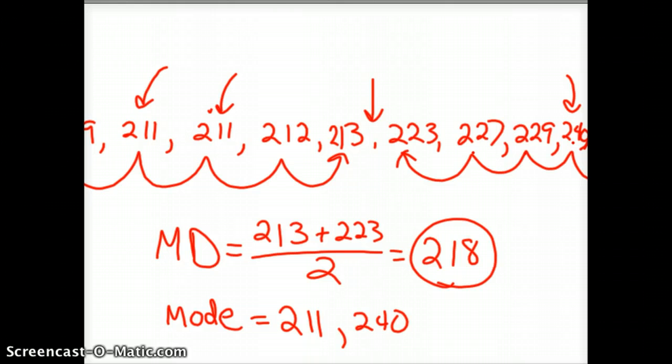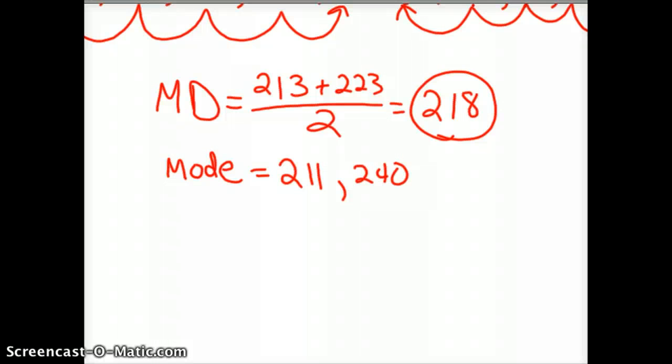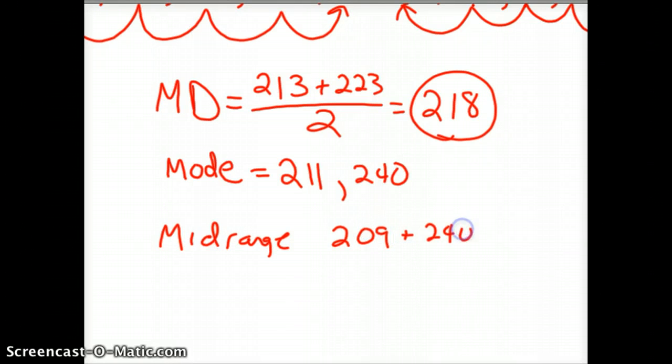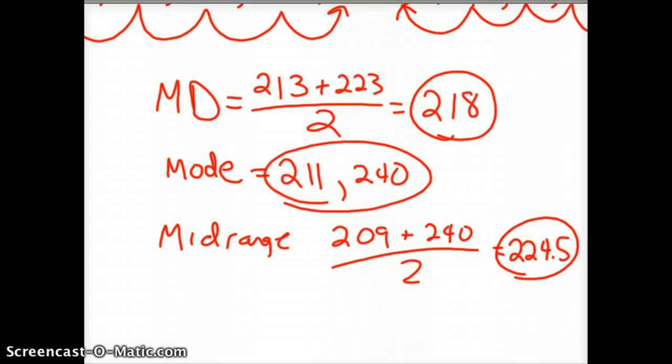And then the last one, 209 and 240 are low and high. So our midrange is 209 plus 240, all divided by 2. 209 plus 240 divided by 2 is 224.5. And so there's our mode, median, and midrange. So hope this helps. Good luck, and see you next time.